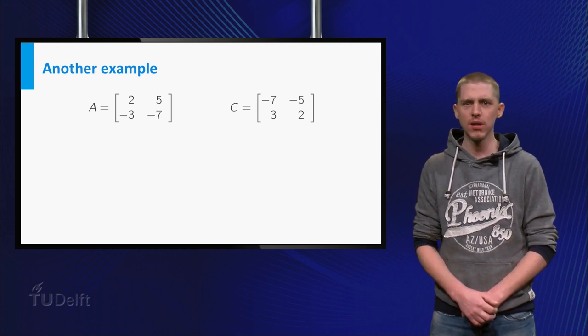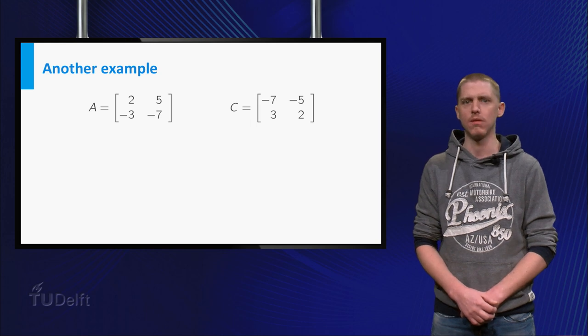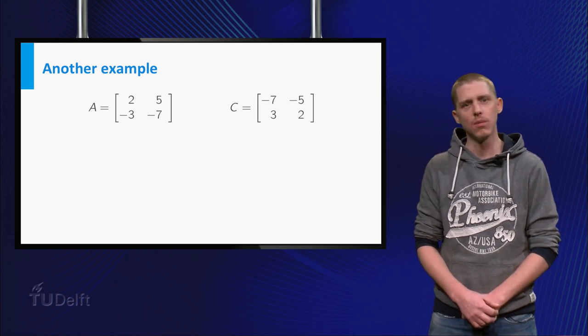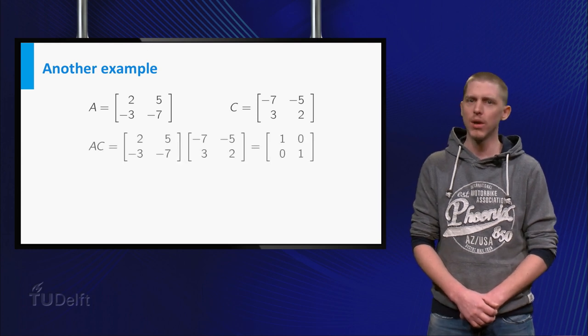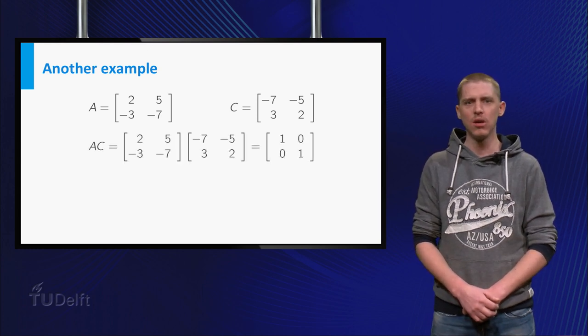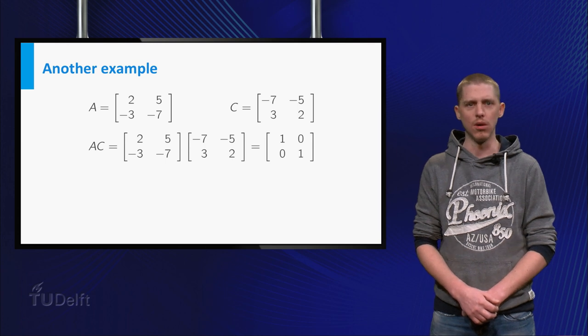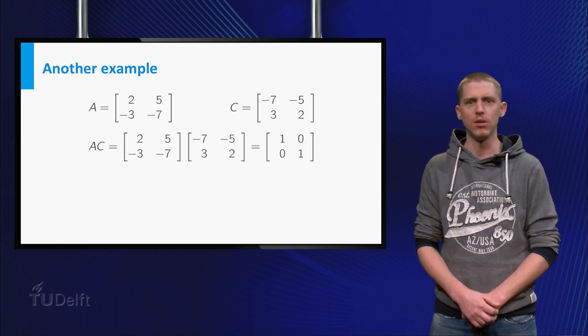The matrix A is 2, 5, minus 3, minus 7, and the matrix C is minus 7, minus 5, 3, 2. We can calculate A times C, which gives us 1, 0, 0, 1, which is the 2 by 2 identity matrix.